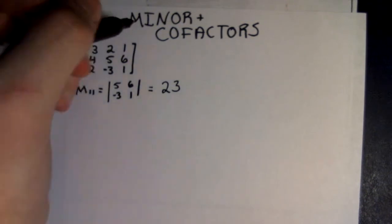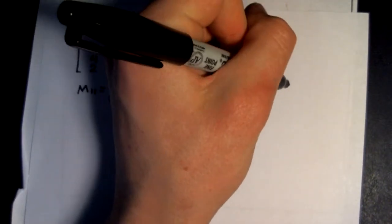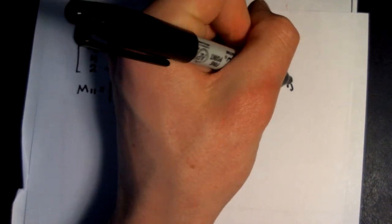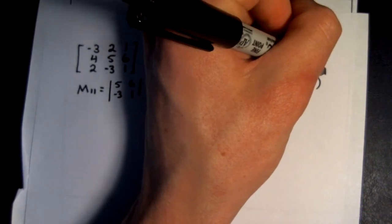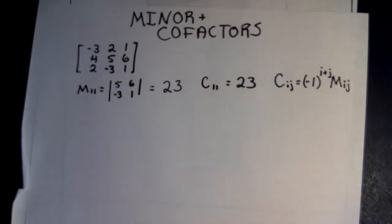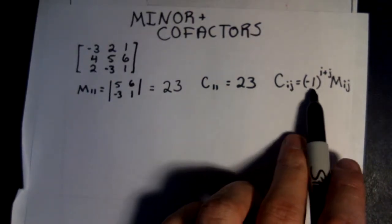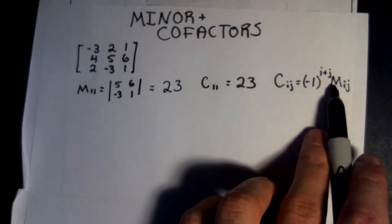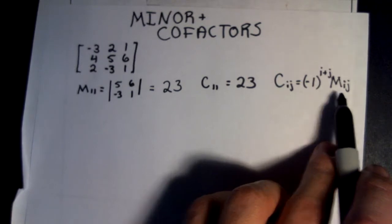Now we look at the cofactor C11, and that's going to be equal to 23 as well. Because the cofactor of ij is equal to negative 1 to the i plus j times the minor ij. So we have negative 1 squared, which is 1, times the determinant 23, so that's just 23.